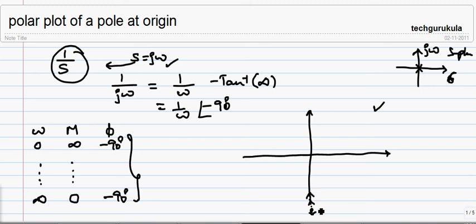It goes like this and it tends to 0 when omega tends to infinity. We represent this point when omega tends to infinity and this point when omega equals 0. This is how the polar plot looks for a pole at origin.